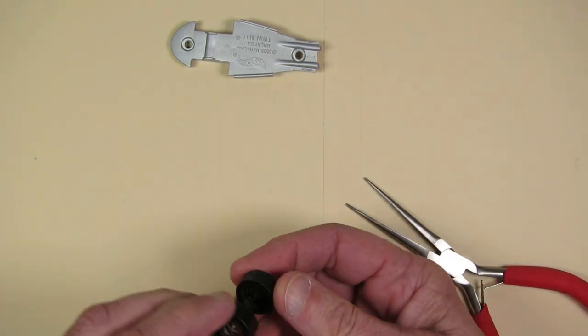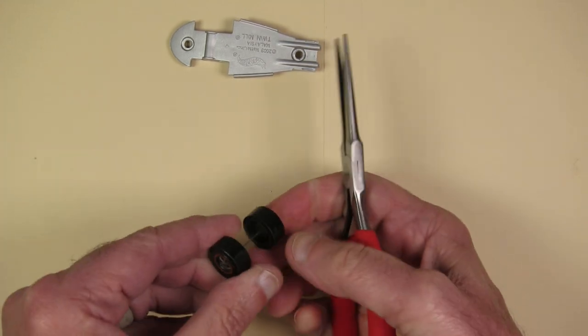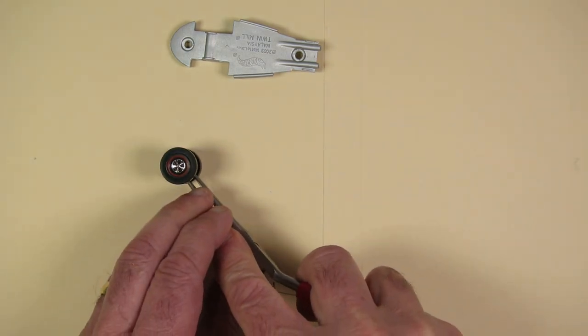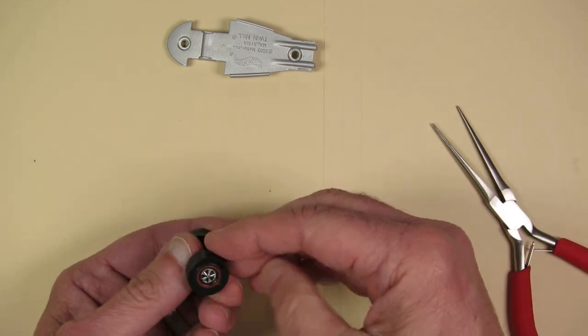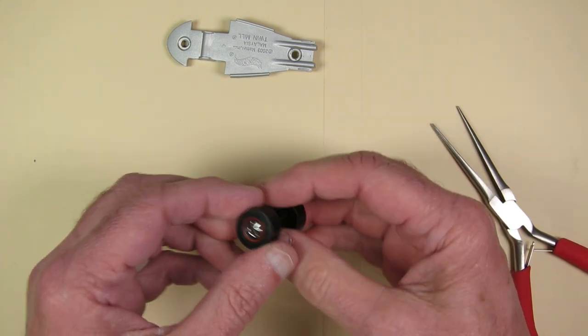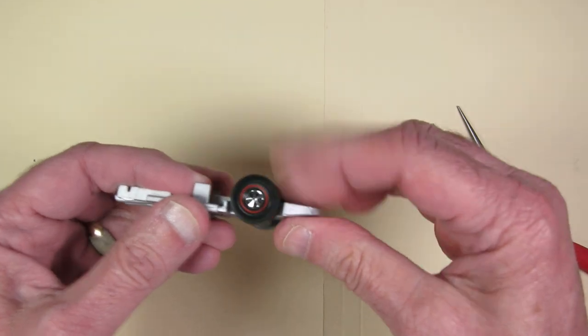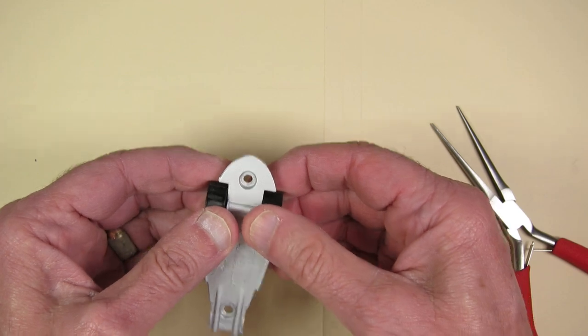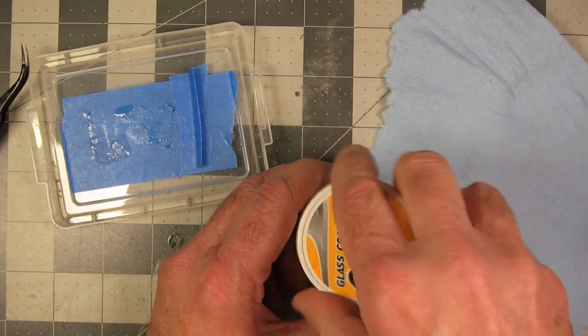The base, if you look at the base up there, I did hit that with Model Master Aluminum Plate Metalizer. Again, rattle can paint. The Model Master paint has been discontinued, so I'm going to miss that. It works really well to simulate a metal base. I do clear coat over that as well after I hit the Aluminizer. It's a lacquer. I do put a clear coat over that as well.